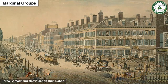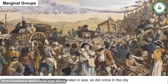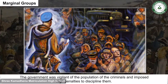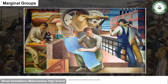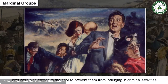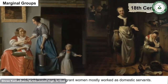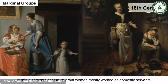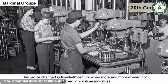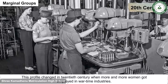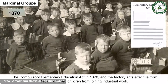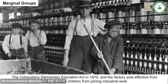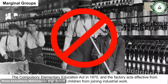Marginal Groups: As London expanded in size, so did crime in the city. The government was vigilant of the criminal population and imposed high penalties to discipline them. Jobs were also offered to the poor to prevent them from indulging in criminal activities. In the mid-18th century, migrant women mostly worked as domestic servants. This profile changed in the 20th century when more women got employed in wartime industries. The Compulsory Elementary Education Act of 1870 and the Factory Acts, effective from 1902, prohibited children from joining industrial work.